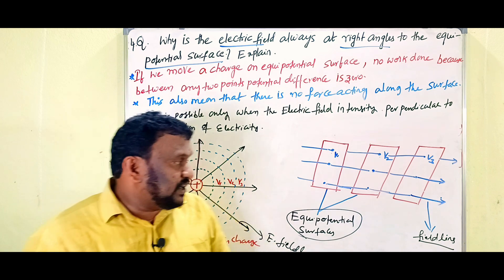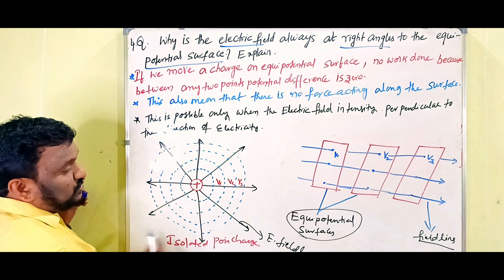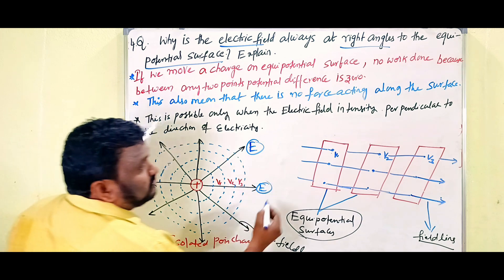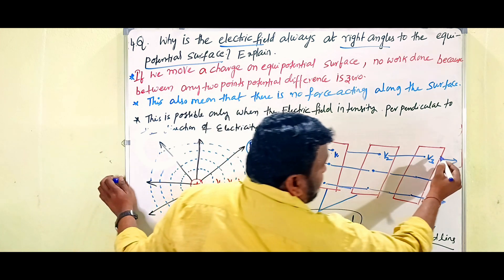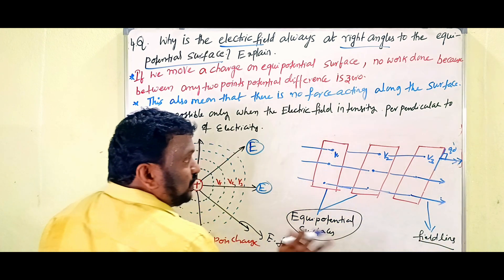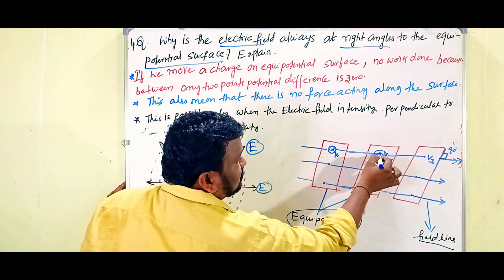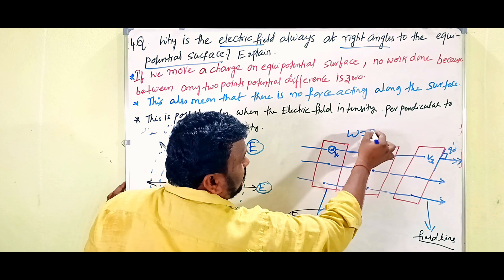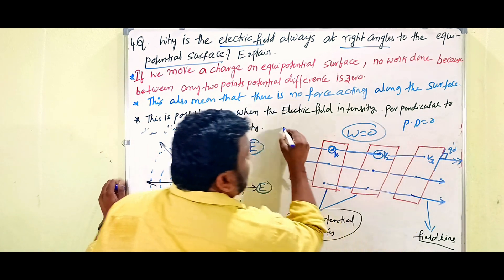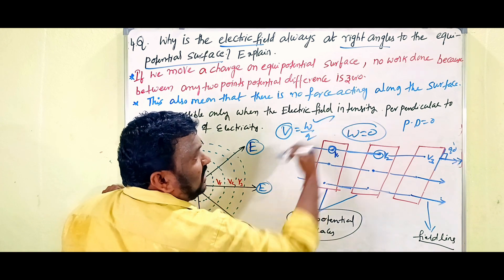For example, look at this equipotential surface on the board. We can see the electric field is radially outward. Look here - this is the surface and this is the field line. How much angle is there? 90 degrees. On this equipotential surface we are able to move the charge, and there is no need to do work because the potential difference is zero.